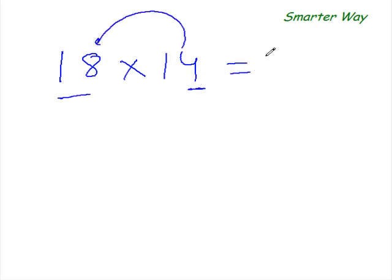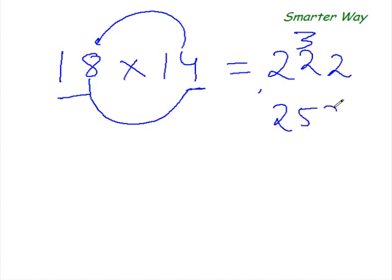Okay. So before we end this class, let me give you one last example. What is, let's say, 18 times 14. So first thing, add this 4 to 18. 18 plus 4 is 22. Right. So 8 times 4 is 32. So carry forward 3, write 2 here. 22 plus 3 is 25. So the answer is 252. That's your answer.